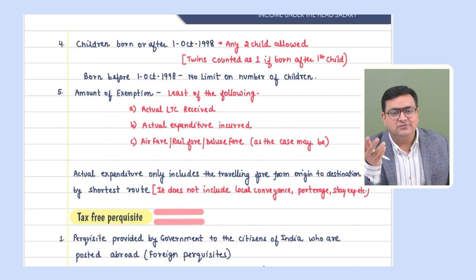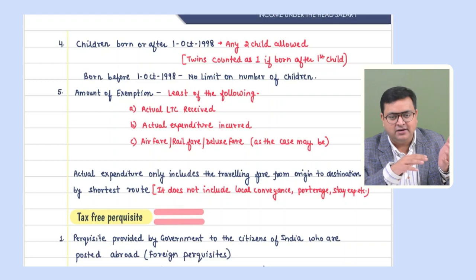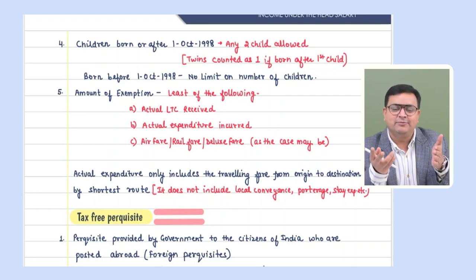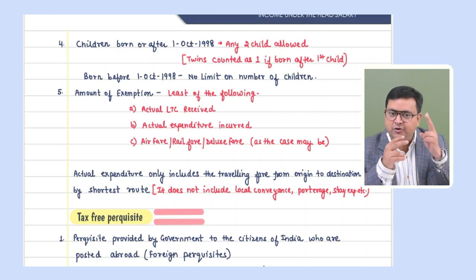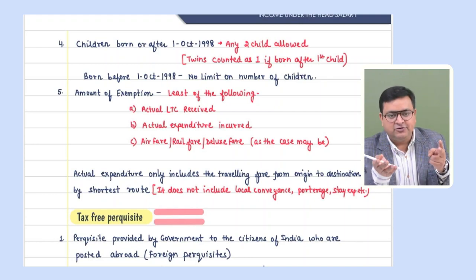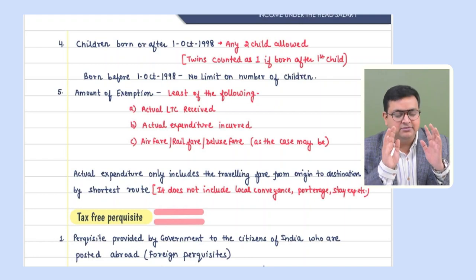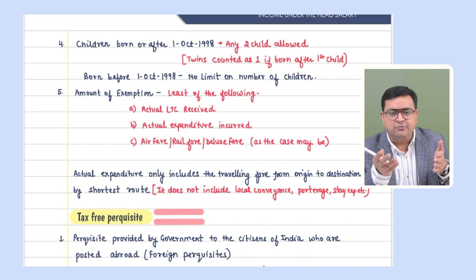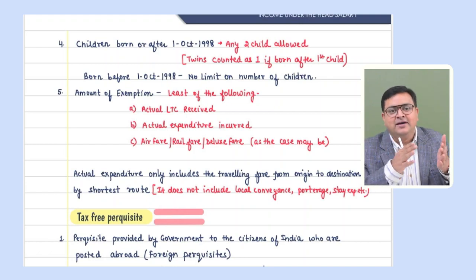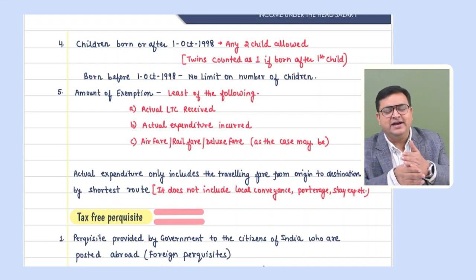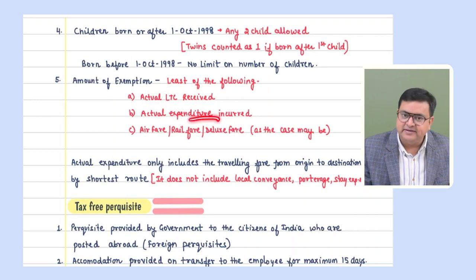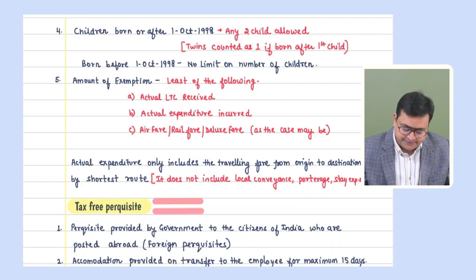There is an exception: if twins were born after the first child, the twins will be counted as one, because it was not the employee's choice. But if twins were the first birth and a child was born after that, the twins count as two and the subsequent child as one — making three total. The amount of exemption is the actual LTC received or actual expenditure/fare, whichever is lower.